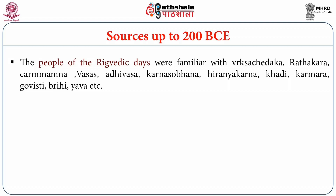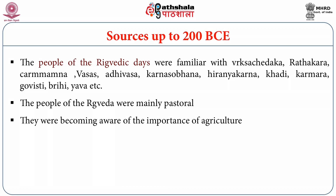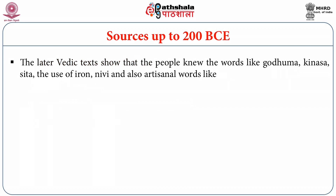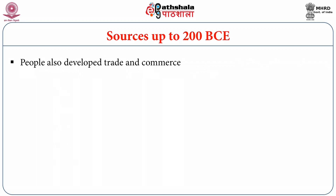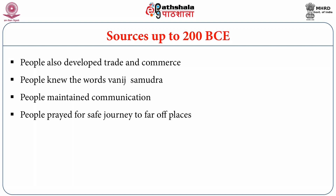The people of the Rigvedic days were familiar with terms like Vriksha Chhedaga, Rathakara, Charmakarma, Vasha, Karmara, Govishti, Vrihi, Yava, etc. The people of the Rigveda were mainly pastoral but were becoming aware of the importance of agriculture. The later Vedic texts show that people knew words like Godhuma, Kinasa, Seta, the use of iron, and also artisanal words like Kaulala, Manikara, Ishukara, Dheivara, Surakara, etc. People also developed trade and commerce, and knew the words Vanij and Samudra. They maintained communication and prayed for safe journeys to far-off places.